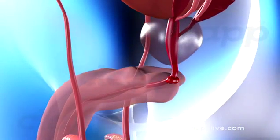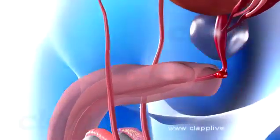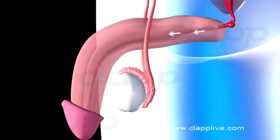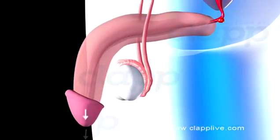Secretions of all these glands are collectively called seminal plasma. Sperms along with seminal plasma constitute semen. The average volume of semen in an ejaculation is 2.5 to 5 milliliters. In males, urine and semen both pass through the urethra.